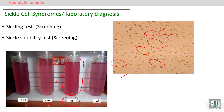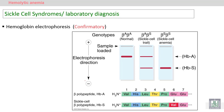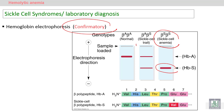Hemoglobin electrophoresis is the confirmatory test. It will diagnose hemoglobin S or sickle cell anemia (SS genotype), and it also diagnoses the sickle cell trait (AS genotype).